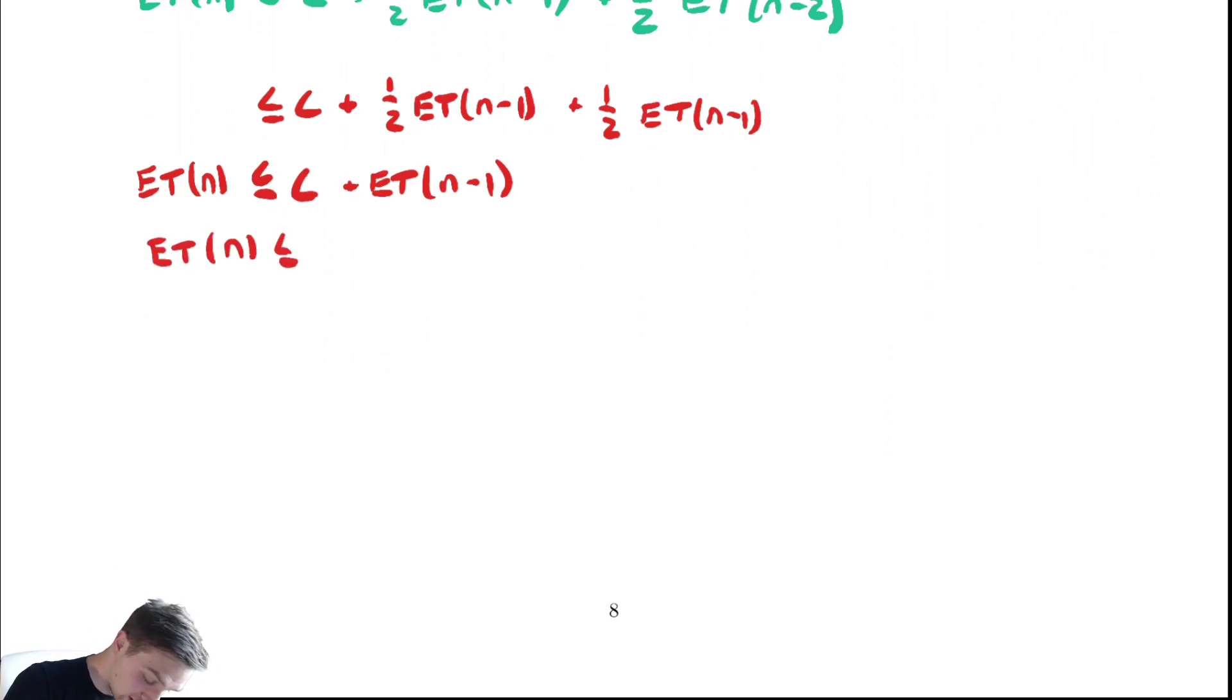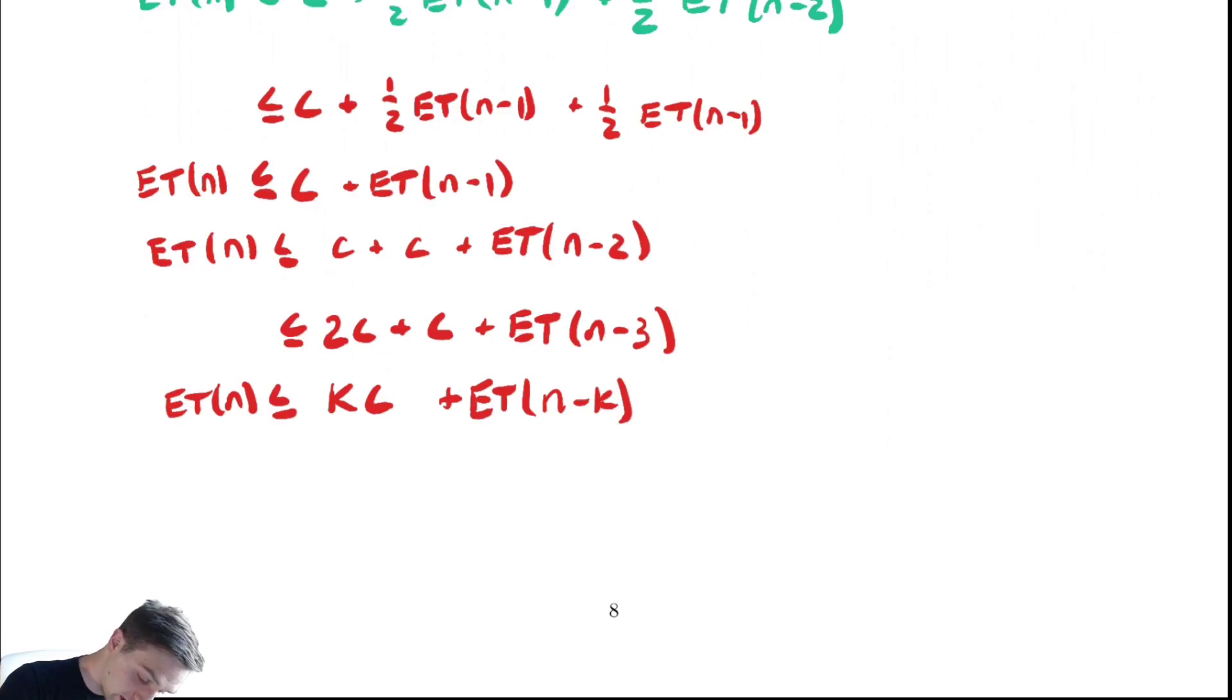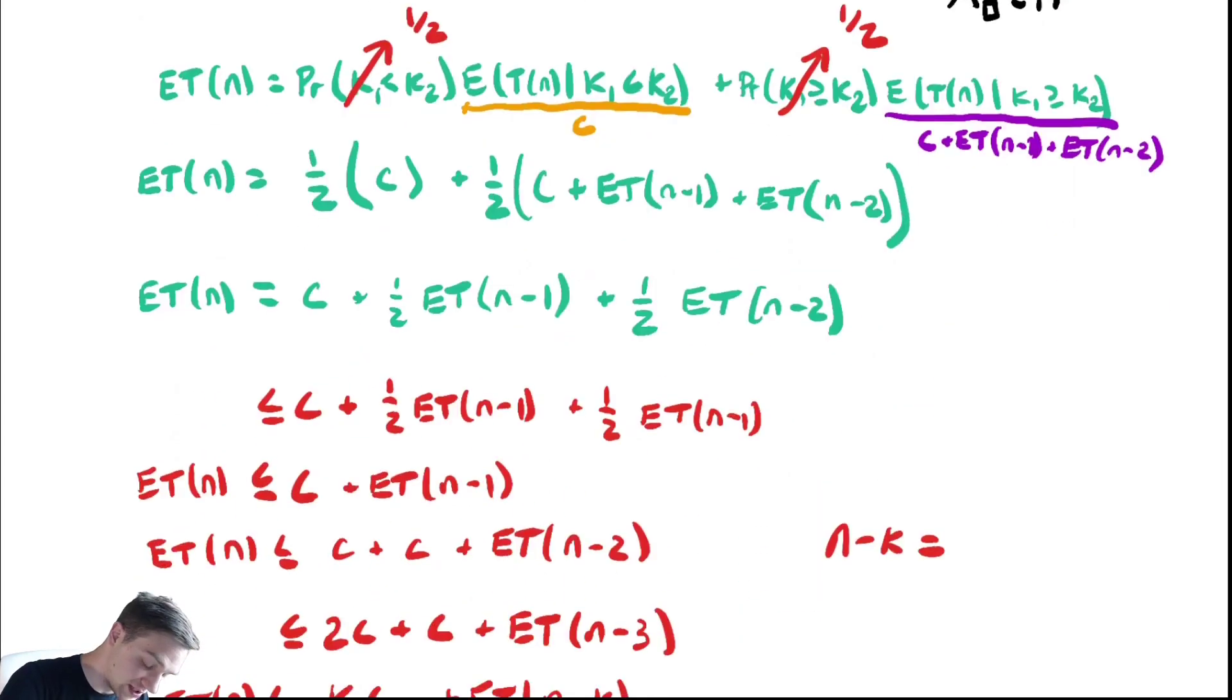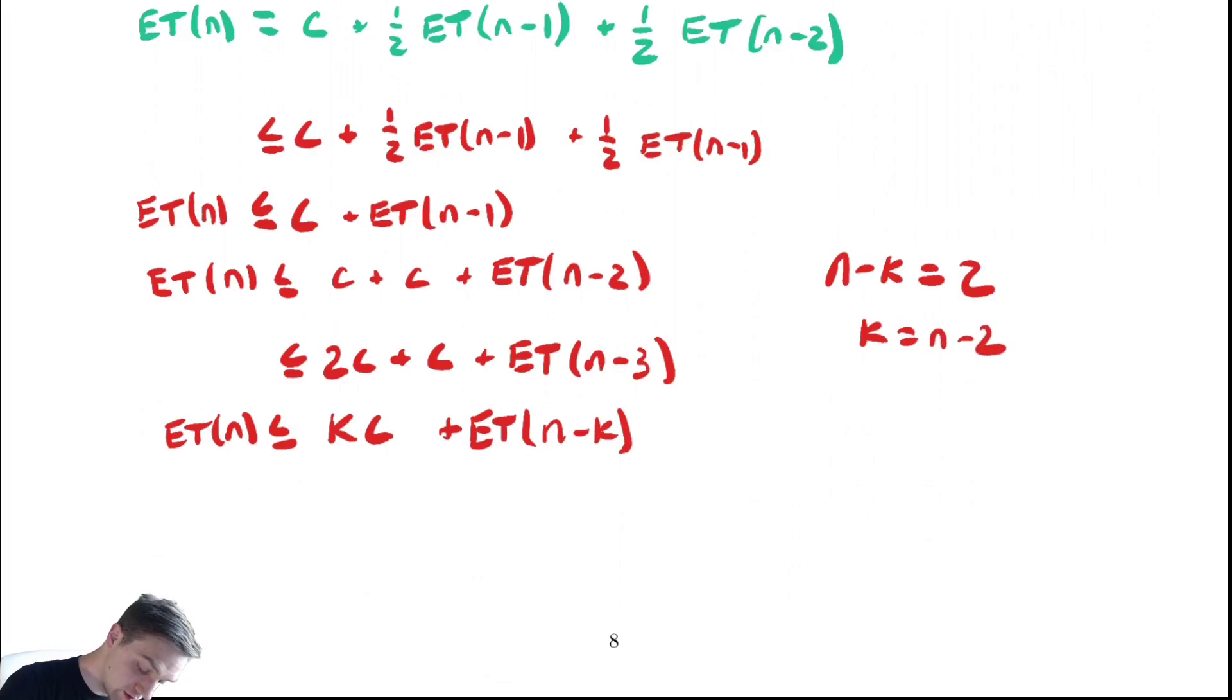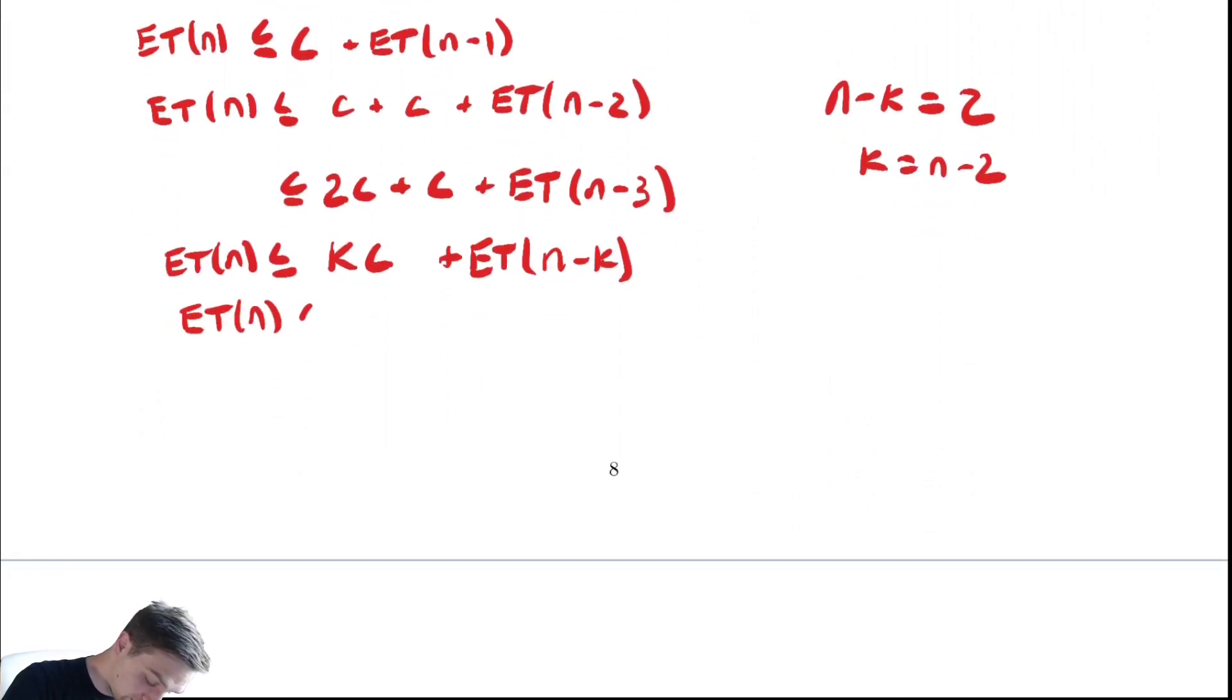So ET(n) less than or equal to c plus c plus ET(n-2). This chunk over here coming from a substitution to another substitution. And we have 2c plus c plus c plus ET(n-3). So ET(n) is less than or equal to Kc plus ET(n-k). We want to solve n minus k equals our base case and this problem will be 2. So k equals n minus 2. ET(n) is less than or equal to n minus 2 times c plus ET(2). ET(2) is just constant. So we are in big O of n.